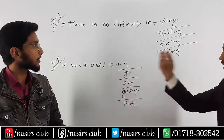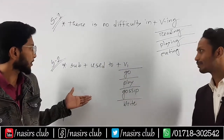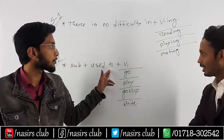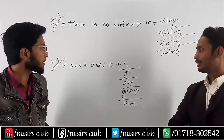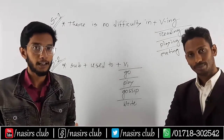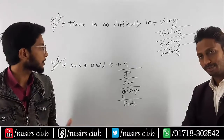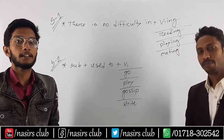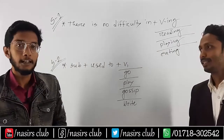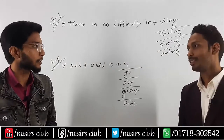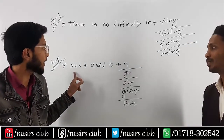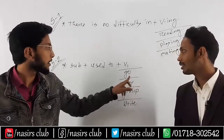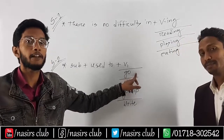Thank you, sir, for the information. So our last structure is: subject plus 'used to.' The 'used to' means that we were doing something in the past. When we use 'used to', we say that we were doing something regularly. For example, 'I used to go there every day.'